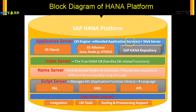If that is the application layer, then what is the database layer? The green box — the Index Server — is the true HANA database. If HANA is a platform and an appliance, the Index Server is what you would call the actual database of HANA, and it handles all database-related functions.